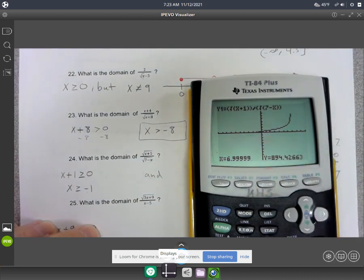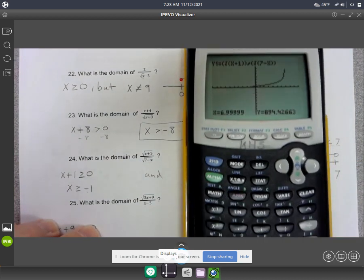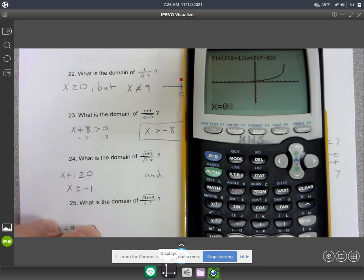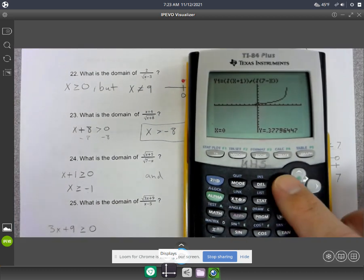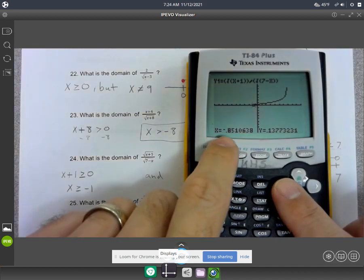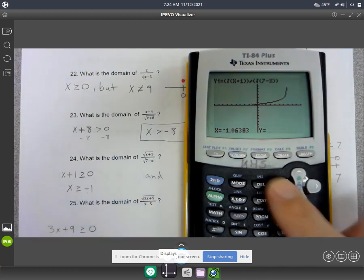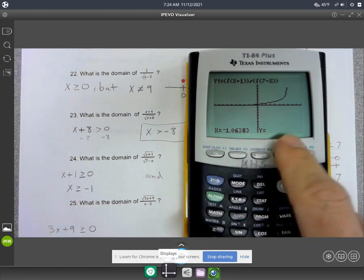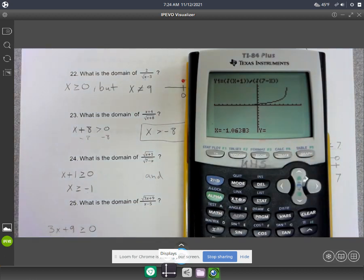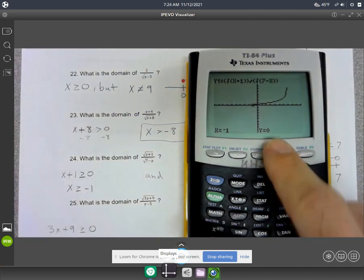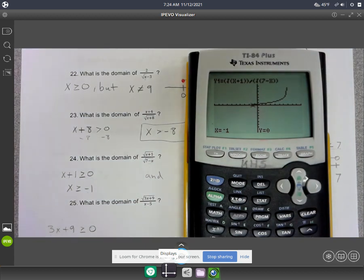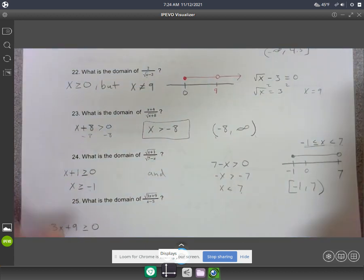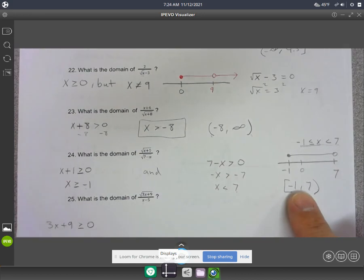And then for how far to the left it goes, you could do 0, plug in 0 for x, and then start pressing left. We're getting close to negative 1 right here. There we go. When we pass to negative 1, it cut out again. Can you plug in negative 1? Yes, it is defined. You get 0 as an answer.